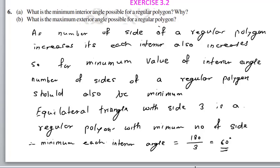Similarly, for exterior angles: as the number of sides increases, each exterior angle becomes smaller. So for the maximum exterior angle, the number of sides should be minimum. The minimum number of sides for a polygon is 3. So we consider an equilateral triangle again, and each exterior angle equals 360 divided by 3 — which gives 120 degrees.